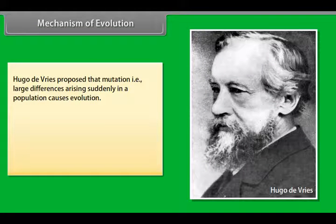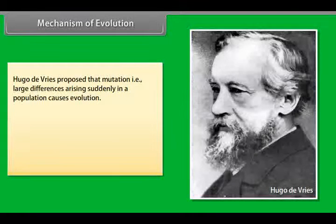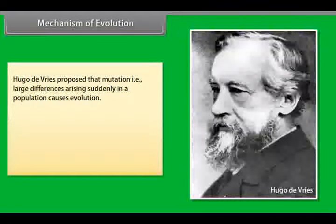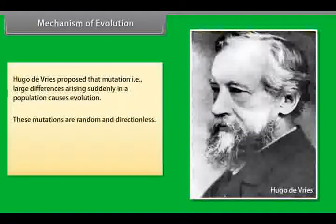Hugo de Vries proposed that mutations — that is, large differences arising suddenly in a population — cause evolution. These mutations are random and directionless.